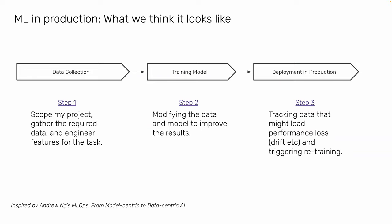ML in production: the first step is you collect the data, train the model, and deploy the model in production. Deployment means making your locally trained model available to many users. For example, if you're working on an email spam detection project and the model is on a local server, how can you integrate it into Gmail so users can benefit from it? Deployment is about making your local model available online to the users for which you're building it.